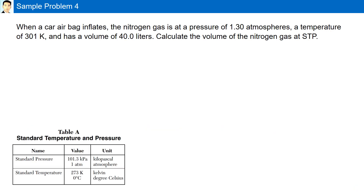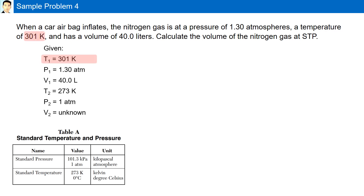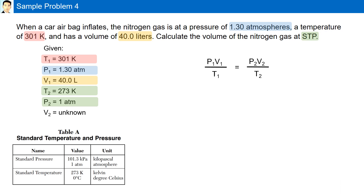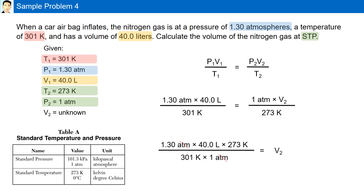Sample problem 4. When a car airbag inflates, the nitrogen gas is at a pressure of 1.3 atm, a temperature of 301 Kelvin, and a volume of 40 liters. Calculate the volume of the nitrogen gas at STP. Given 301 Kelvin, 1.3 atm, and 40 liters as the initial values, and 273 Kelvin and 1 atm as the final values from reference table A — standard temperature and pressure — we need to calculate V2, our unknown. Using the combined gas law and substituting, we have our final volume as 47.2 liters.